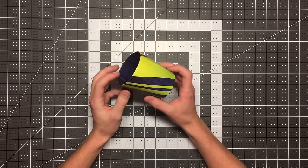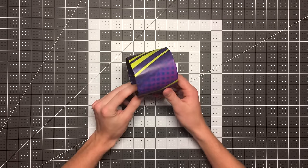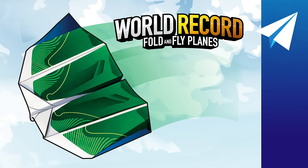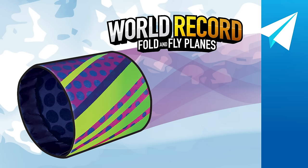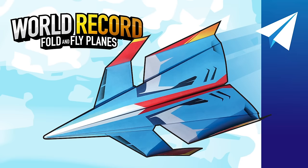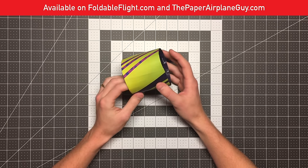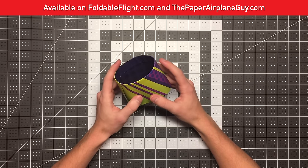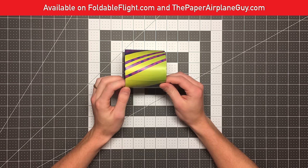Now, the tube is actually designed by John Collins, the world record holder for paper airplane distance. This is part of a collaboration I did with him called World Record Fold and Fly Planes, where we took eight of John's very best designs - planes that boomerang back to you, planes that flap as they fly, the world record paper airplane herself, and some others. I designed illustrated templates for each of those planes so that when you fold them, they can look beautiful like this, rather than a plain white sheet of paper. If you purchase that, you will get three copies of each template, and you can get that at foldableflight.com or thepaperairplaneguy.com.